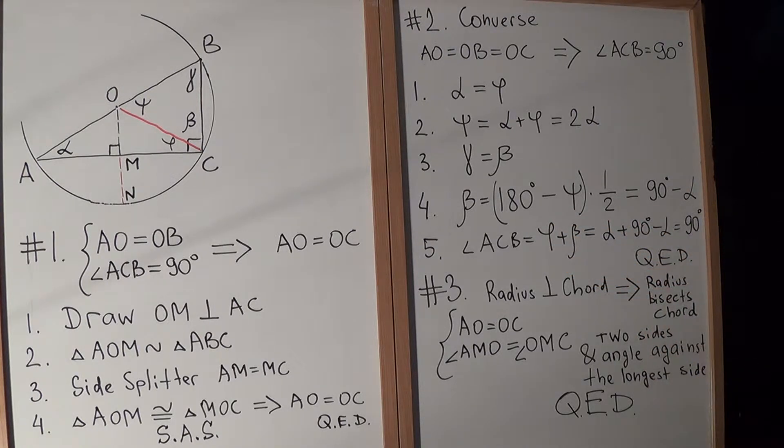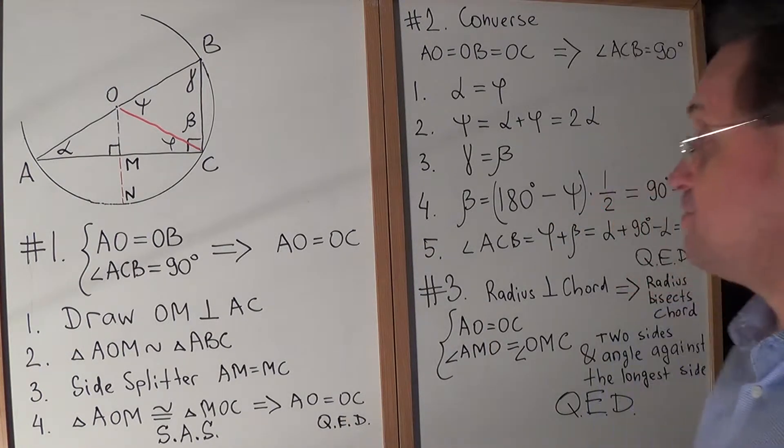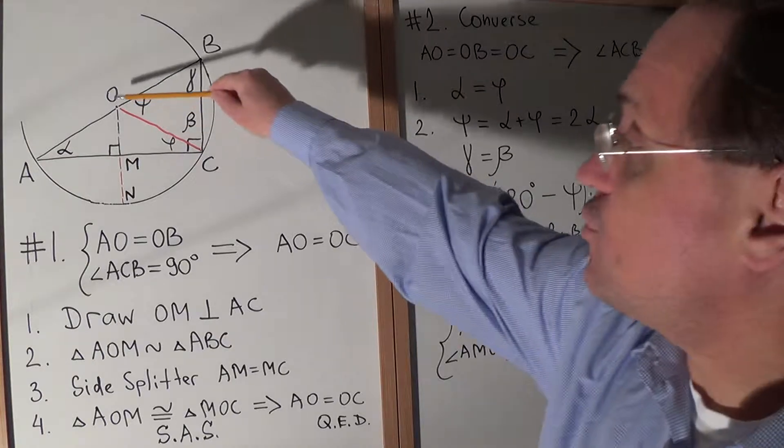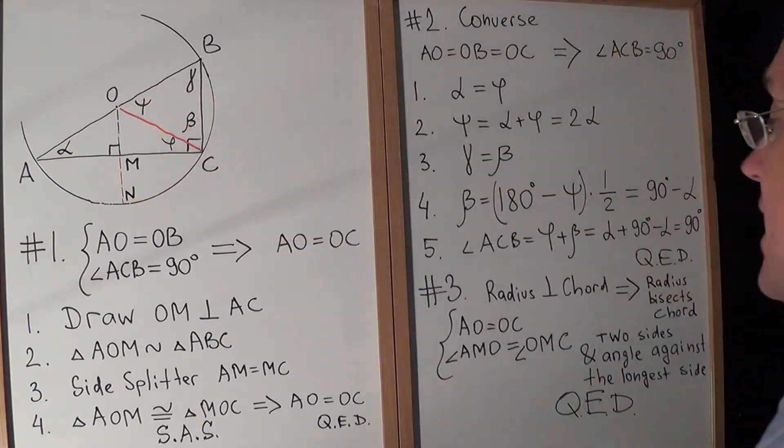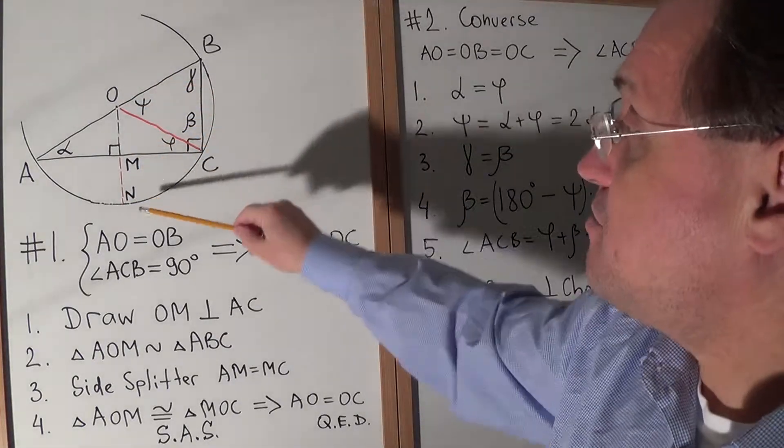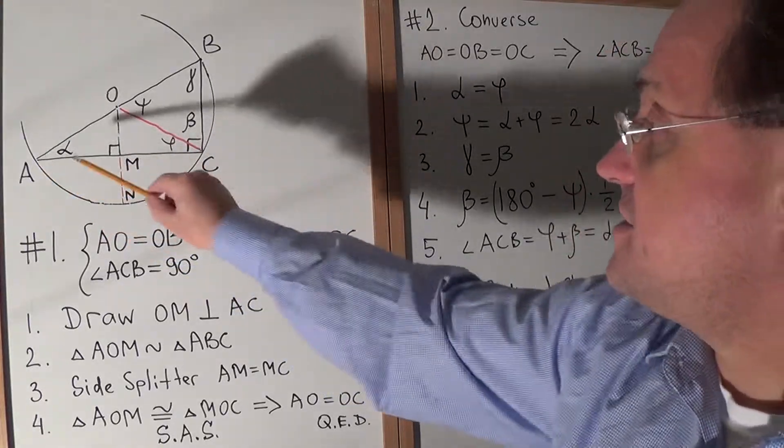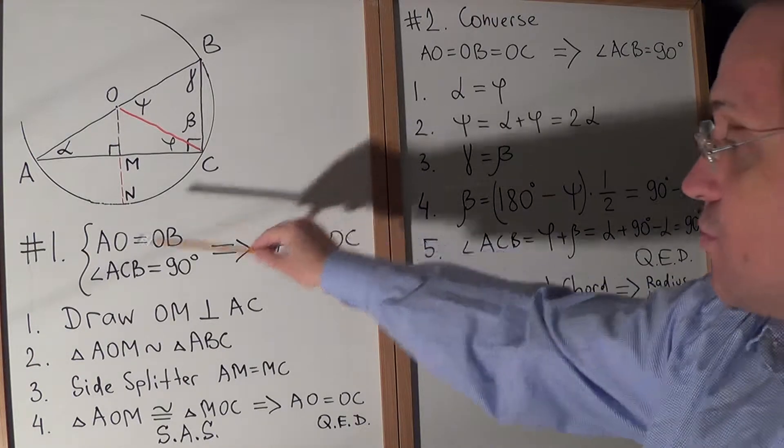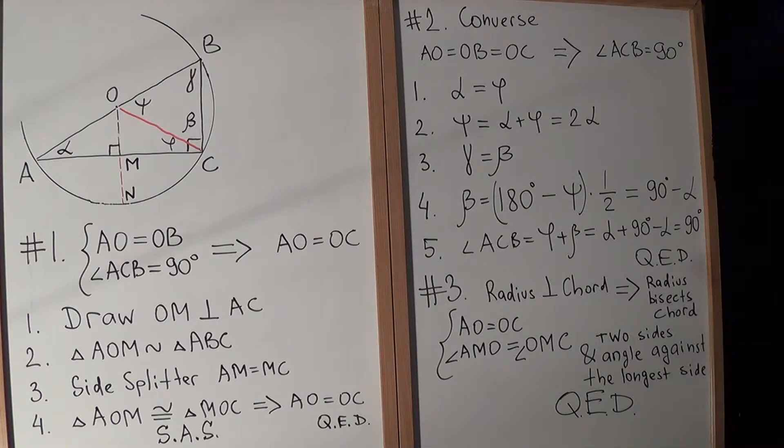Let's quickly consider we have this diagram. Another important theorem, and this theorem is as follows: If we have a radius ON and if radius is perpendicular to a chord AC, then it bisects the chord. Very similar to prove to here, but we'll do it a different way.